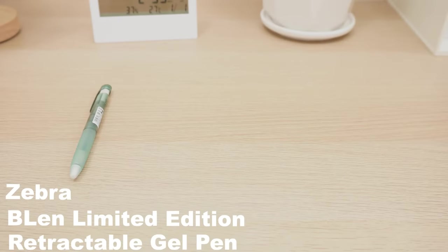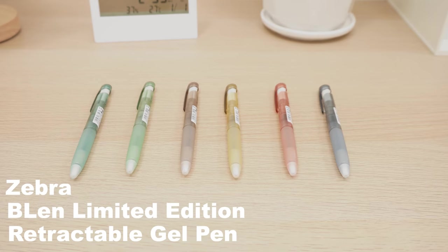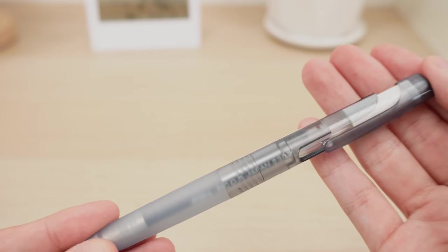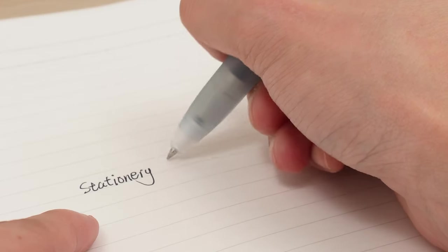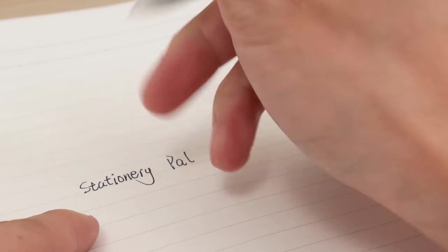Next, the Zebra Blend Limited Edition Retractable Gel Pen. It's pretty cool. Thanks to its see-through casing, you can easily monitor the ink level. The ink dries quickly and resists smudging. The pen tip's design reduces vibrations for smoother writing, and the ink flows like a dream.